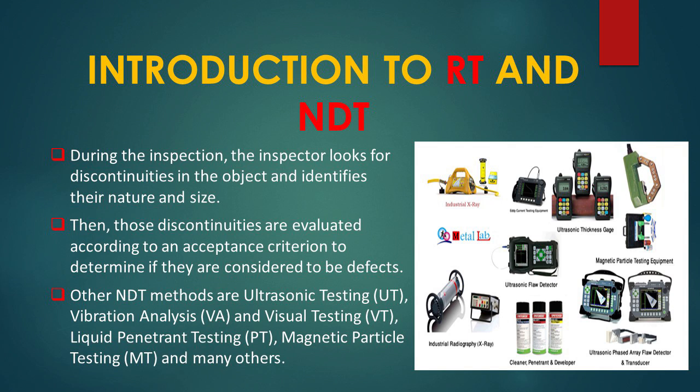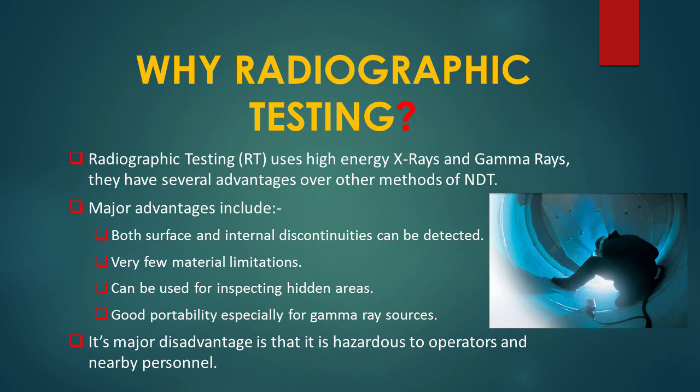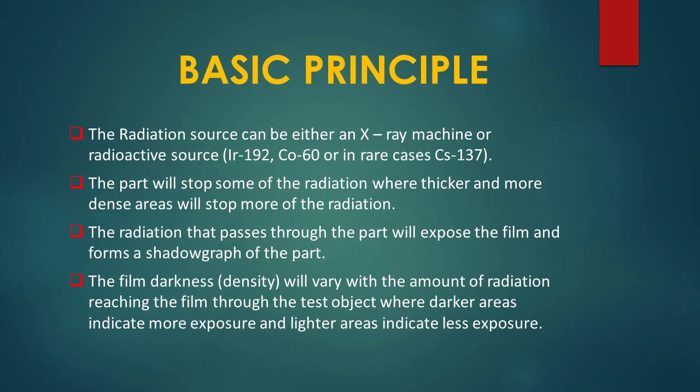Besides radiographic testing, other common methods of NDT include ultrasonic testing, vibration analysis, visual testing, and magnetic particle testing. The question arises: if there are so many methods available, why choose radiographic testing? The major advantages are that both surface and internal discontinuities can be detected, significant variation in composition can be checked, there are very few material limitations, hidden areas are easily inspectable, equipment is portable, minimal preparation is required, and a permanent test record is obtained. Its only major disadvantage is that radiation can be hazardous to operators and nearby personnel.